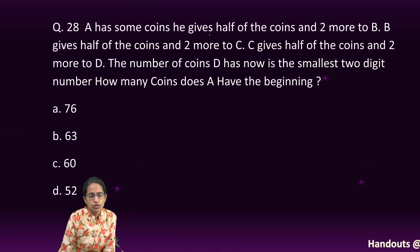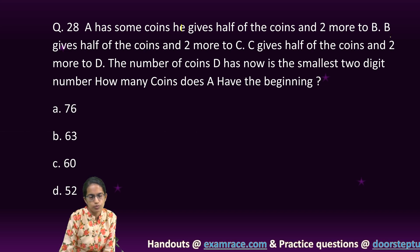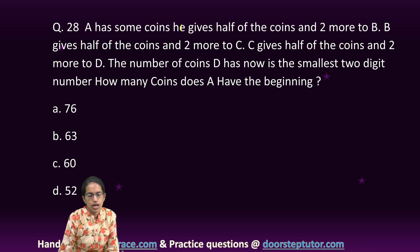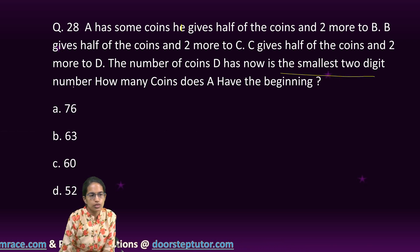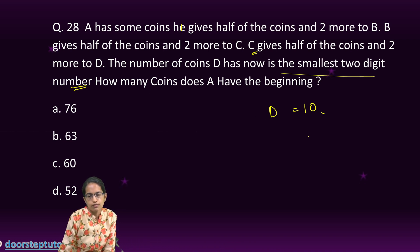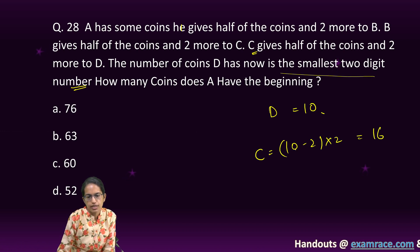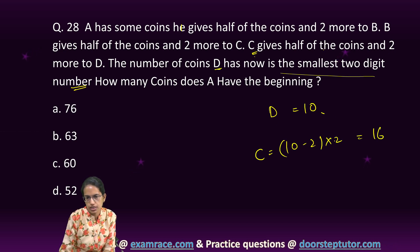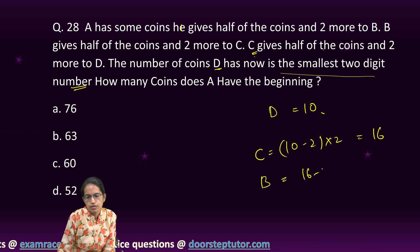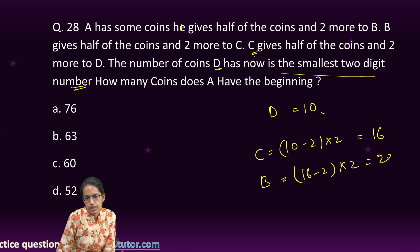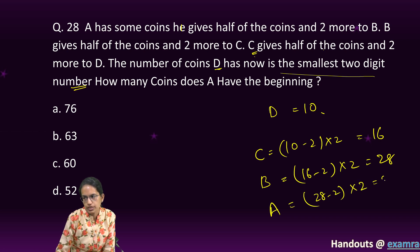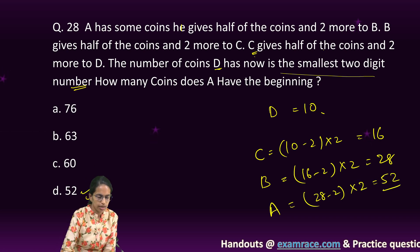The next is, A has some coins. He gives half of the coins plus two more to B. B gives half and two more to C. C gives half and two more to D. D has the smallest two-digit number, which is 10. Now, how much C would have? 10 minus 2 into 2. So, C would have 16. If C gives half, that is 8 plus 2, that becomes 10, which is D, correct? So, B would have 16 minus 2 into 2, that is 28. And A would have 28 minus 2, which is 26 into 2. 26 into 2 is 52. So, 52 is the right option here.